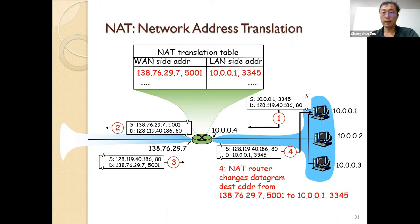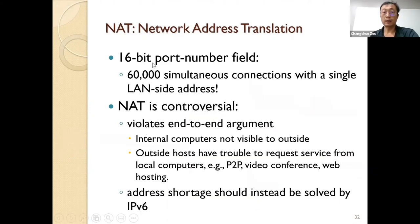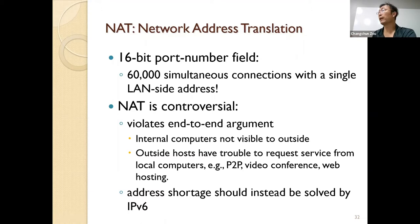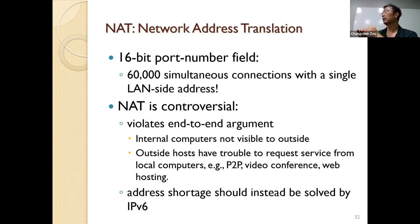This is how NAT works. Because the port number is 16-bit, in theory a NAT device can support more than 60,000 concurrent connections for the local area network, so it can support many computers. Of course, if you support hundreds of computers in the local area network, that puts a lot of burden on the NAT device, because you need to check and modify every packet. And whenever you modify any packet header, you need to recompute the checksum.